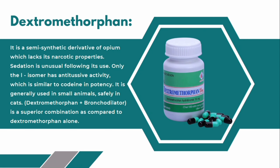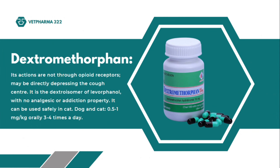Dextromethorphan is a semi-synthetic derivative of opium which lacks its narcotic properties. Sedation is unusual following its use. Only the class 1 isomer has antitussive activity, which is similar to codeine in potency. It is generally used in small animals and safely in cats. The combination of dextromethorphan and a bronchodilator is a superior combination compared to dextromethorphan alone. Its action is not through opioid receptors; it may be directly depressing the cough center. It is the dextro-isomer of levorphanol with no analgesic or addiction properties.